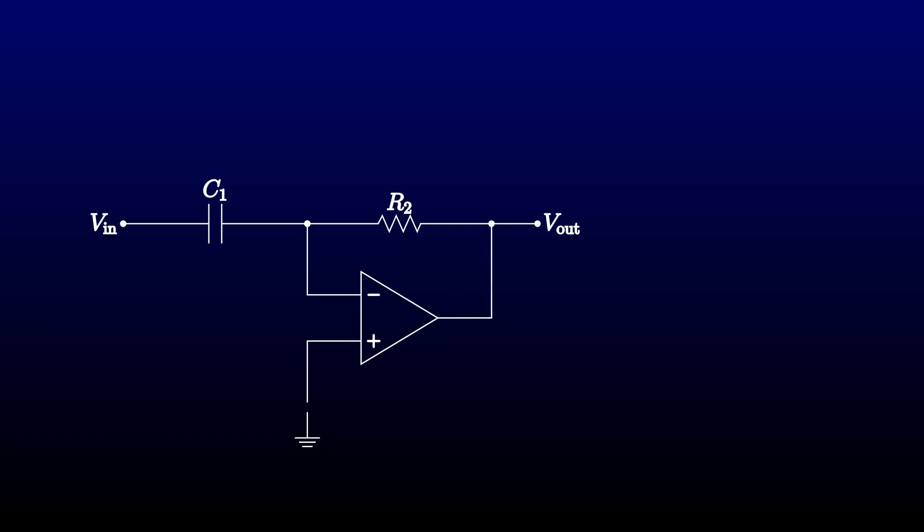The current through the capacitor must balance the current through the feedback resistor, and we know how to find both currents. When we set them equal, we can solve for the output voltage. And ideally, the circuit should be precisely a differentiator, provided that all the voltages stay within range.